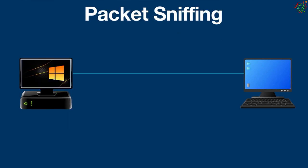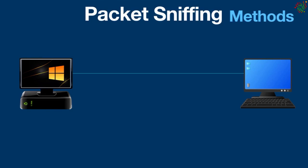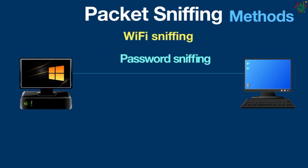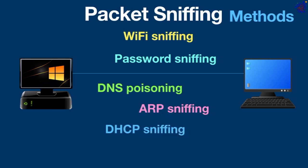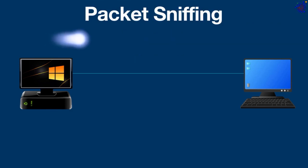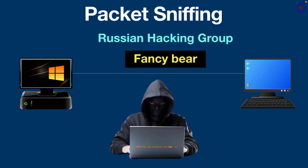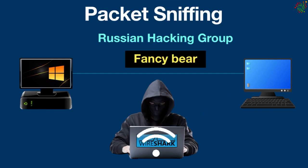Some of the different types of packet sniffing methods and techniques that hackers use include WiFi sniffing, password sniffing, DNS poisoning, ARP sniffing, DHCP sniffing, and more. A notable example is the Russian hacking group known as Fancy Bear, which used WiFi sniffing to steal usernames, passwords, and other data from hotel guests in Europe and the Middle East.